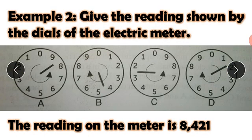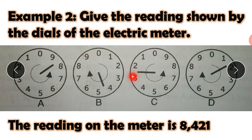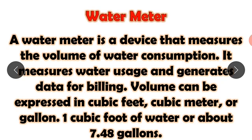Now let's give the reading shown on the dials of the electric meter. Starting with A: between eight and nine, that is eight. Between four and five, that is four. Between two and three, that is two. Between one and two, that is one. So the reading is 8,421. Now let's proceed to water meters.